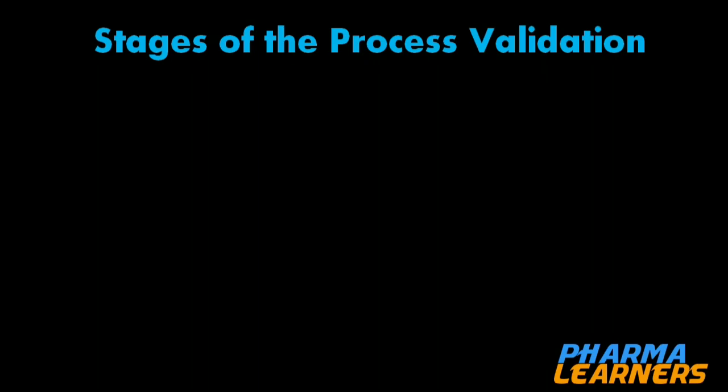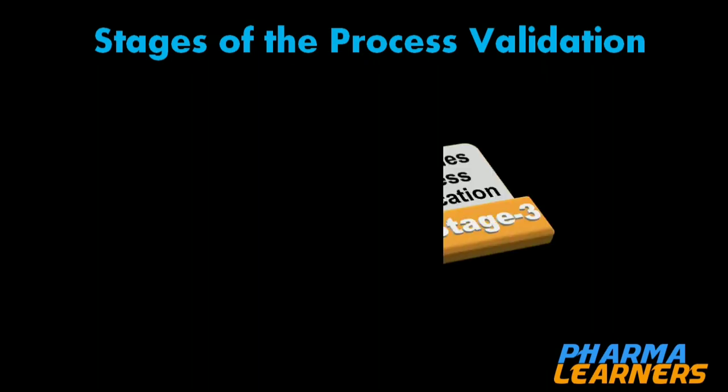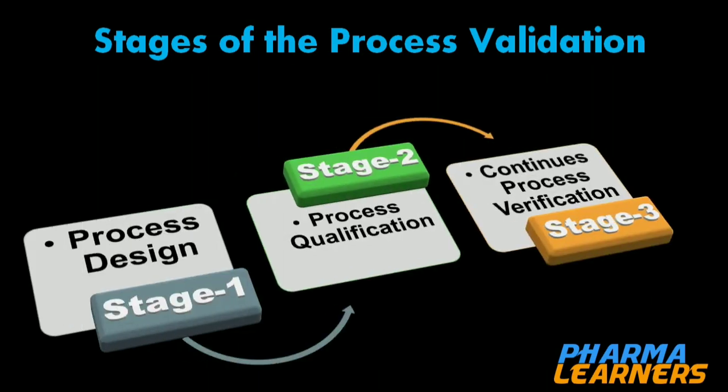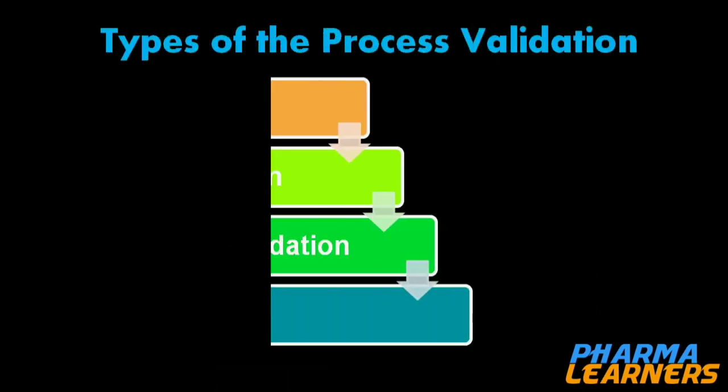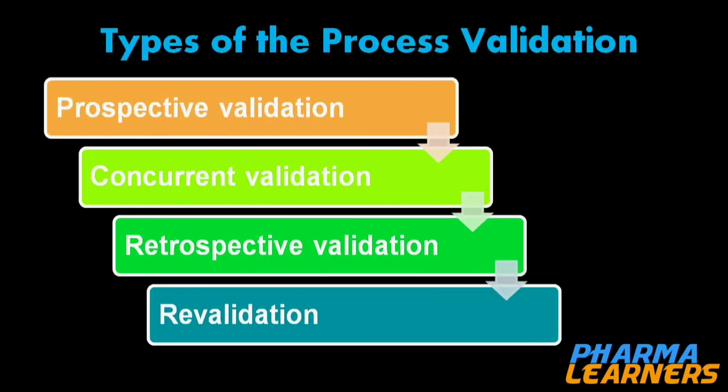There are 3 stages of process validation. Stage 1 is process design, stage 2 is process qualification, and stage 3 is continuous process verification. And there are a total of 4 types of validation: prospective validation, concurrent validation, retrospective validation, and re-validation.